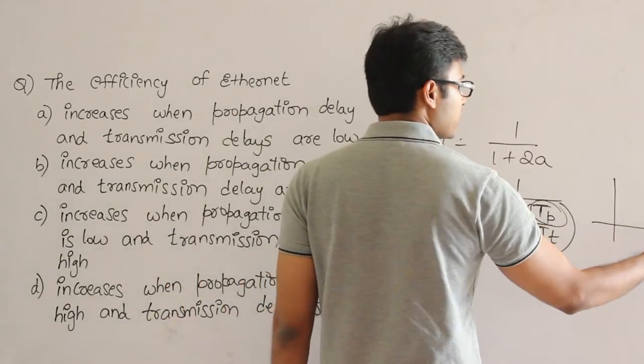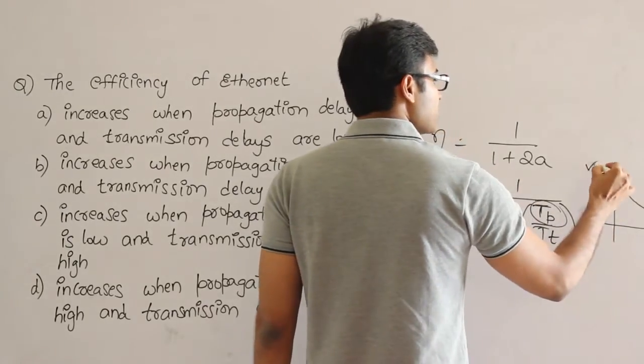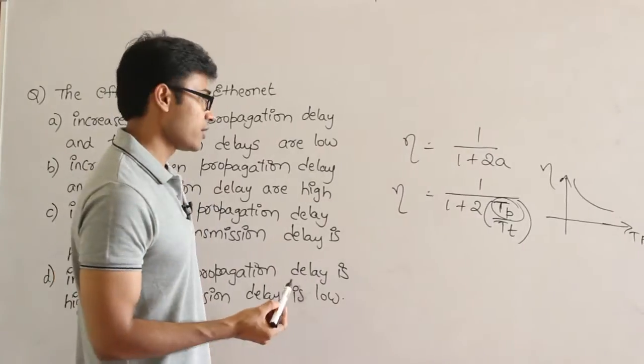Which means if you draw the curve, it will look like this. As the propagation delay increases, the efficiency will decrease this way. It is not a straight line, okay? It is a kind of parabola.